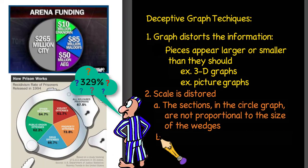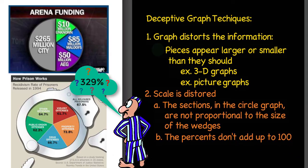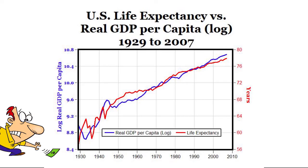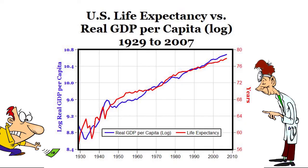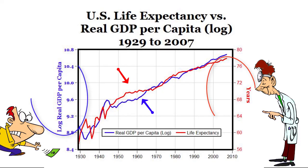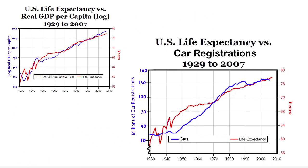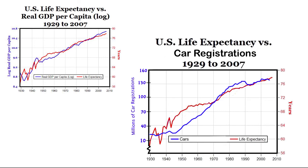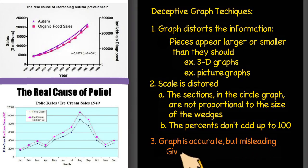A similar problem occurs when the percents do not add up to 100. We have a graph on US life expectancy versus real gross domestic product, and we see a correlation between the money the US has and the life expectancy. But that does not always mean one caused the other — advances in medicine may also have increased our life expectancy. You need to beware of graphs that have two different variables with different scales on the same axis, because you can make it appear that almost anything is correlated. For example, we could compare the number of car registrations to life expectancy, but that doesn't mean an increase in cars actually causes us to live longer. Let's add graphs that are accurate but misleading by giving an irrelevant correlation to our list.